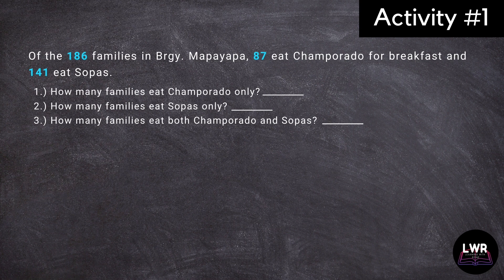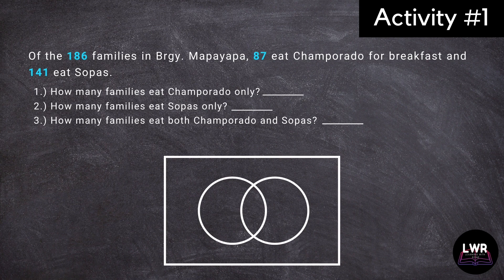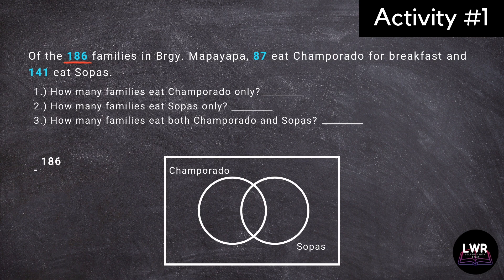In order to get the answer, we need to have this illustration. We will name the circle at the left side to represent the data for Champorado and the circle at the right side for sopas. We can start our solution by answering first the second question, which is how many families eat sopas only? To get the answer, which is 99, we need to subtract 87 from 186. Now that we have the partial data for the number of families who eat sopas, we will subtract 99 from 141 to get 42, which is the answer to the third question.